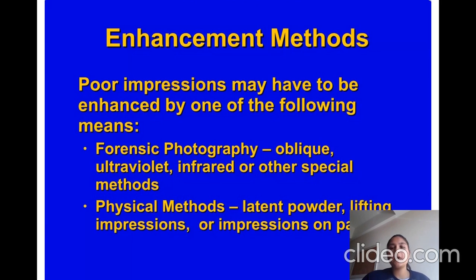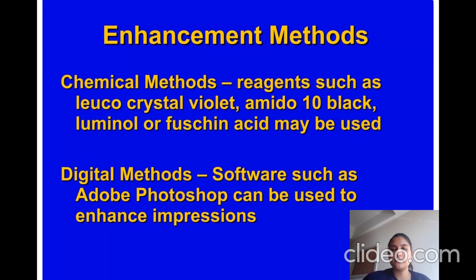Enhancement methods: Poor impressions may have to be enhanced by one of the following means. Forensic photography using oblique, ultraviolet, infrared, or other special methods. Physical methods include latent powder and lifting impressions. Chemical methods include reagents such as luminol, crystal violet, amido black, tan black, or fuchsine acid. Digital methods include software such as Adobe Photoshop to enhance impressions.